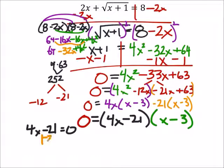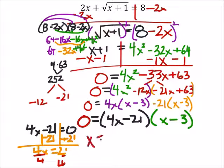So, I'm going to add 21 to both sides. And that would give me 4x equals 21. And then divide by 4. And from that, I get x equals 21 fourths.